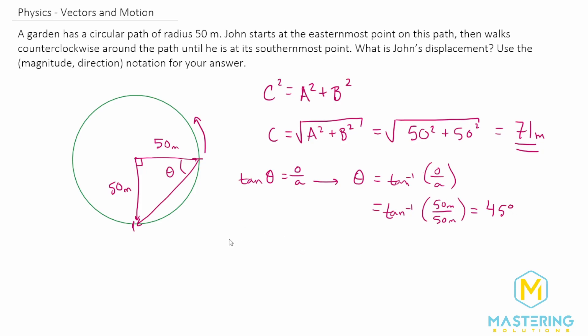So we know that John went a displacement of 71 meters at an angle 45 degrees southwest.